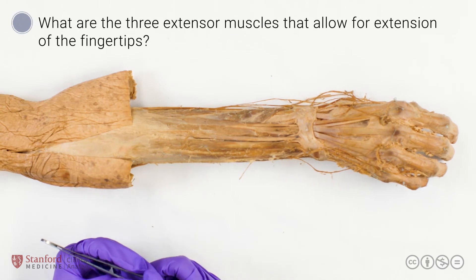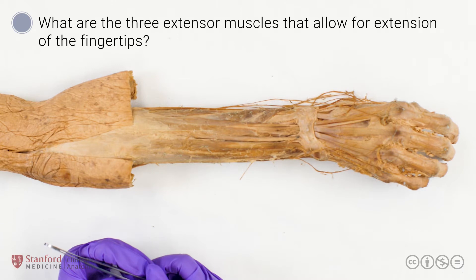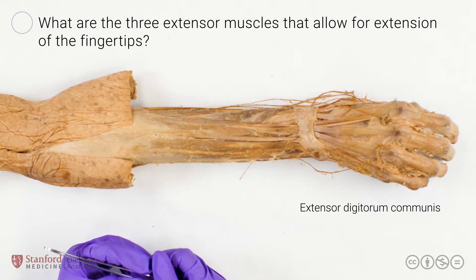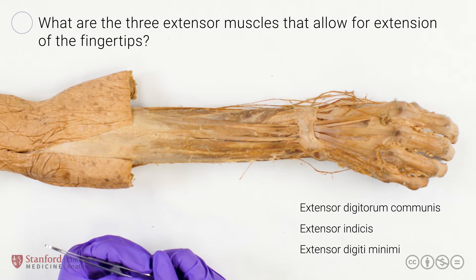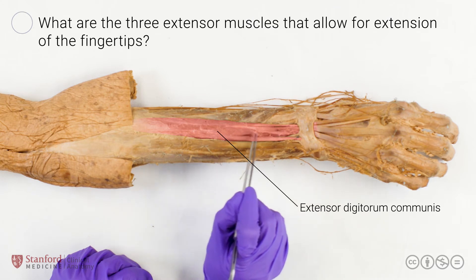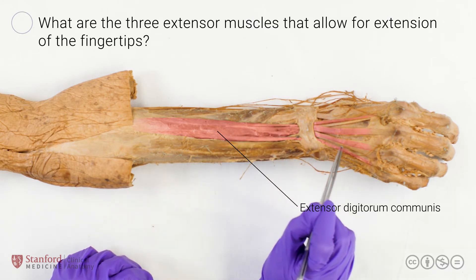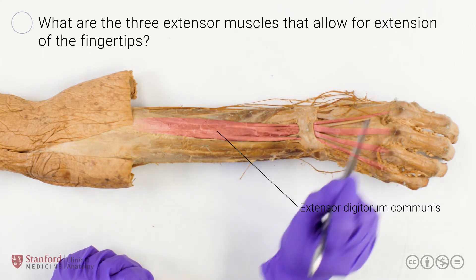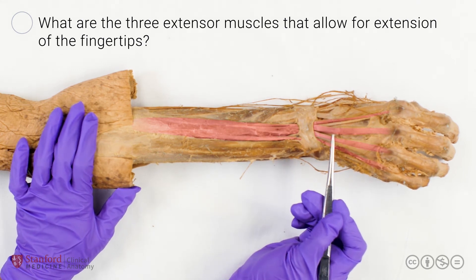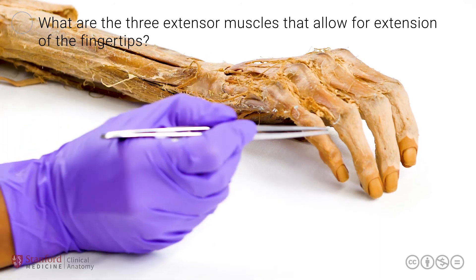What are the three extensor muscles that allow for extension of the fingertips? The three extensor muscles that allow for extension of the fingertips are extensor digitorum communis, extensor indices, and extensor digiti minimi. Let's start with extensor digitorum communis. We can see its muscle belly more proximally here, and we then see it branching into multiple tendons that progress towards each of the individual four fingers. If I were to tug on this tendon here, we see extension of the ring finger in particular.